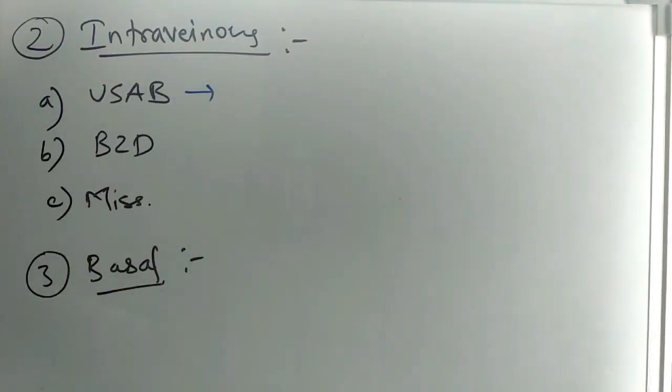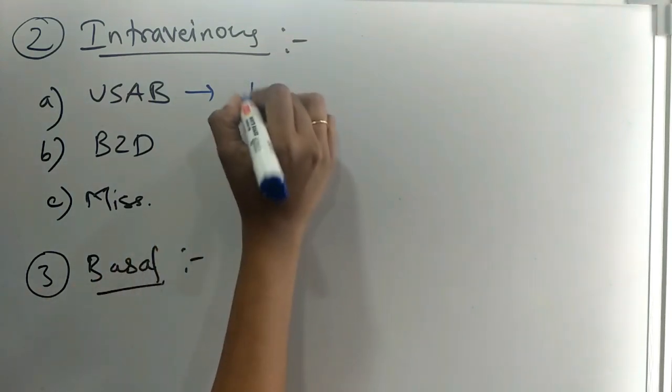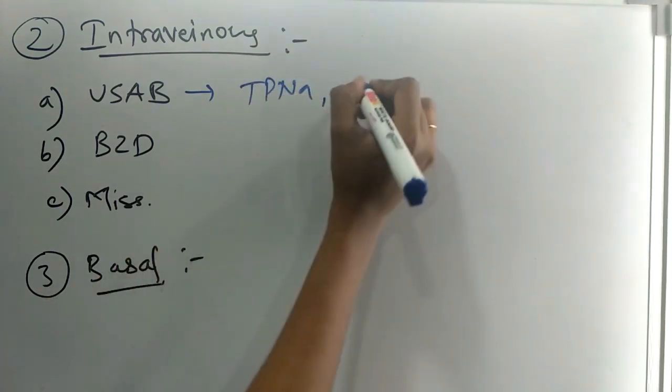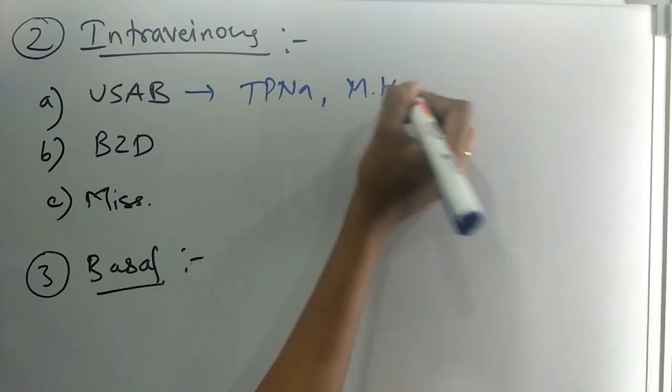The first class is ultra short acting barbiturates. Barbiturates include thiopental sodium. Second is methohexital sodium.